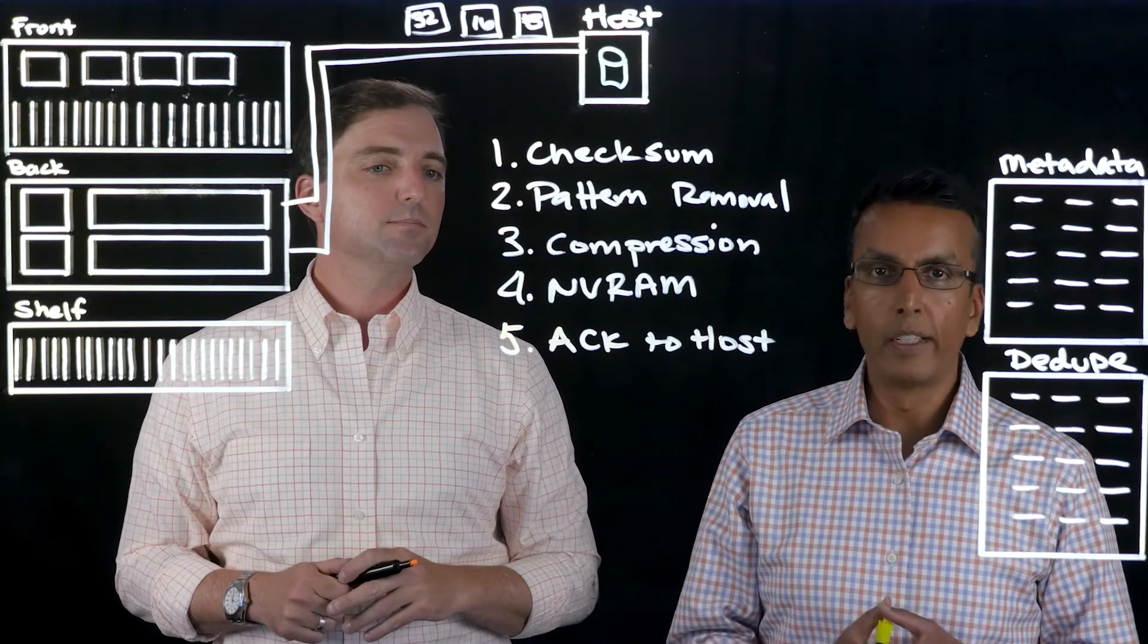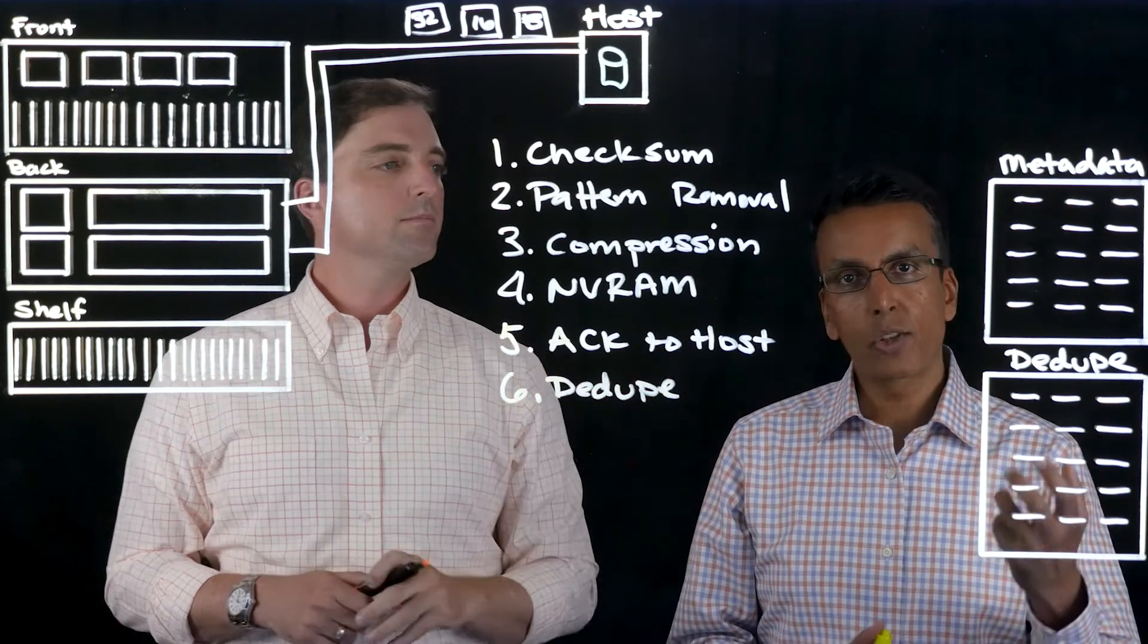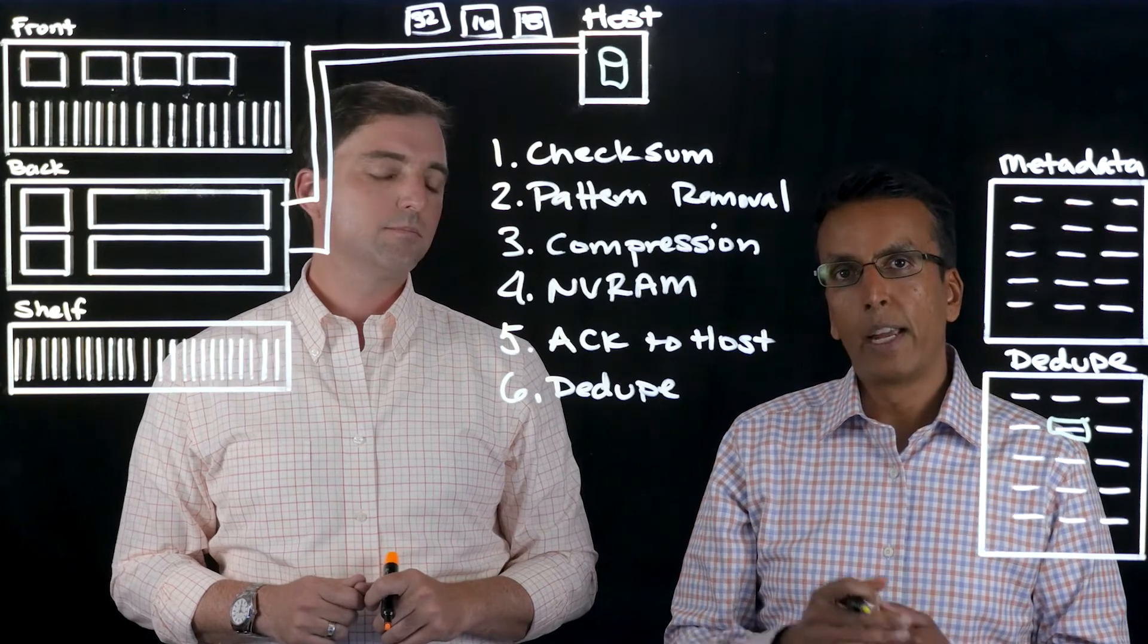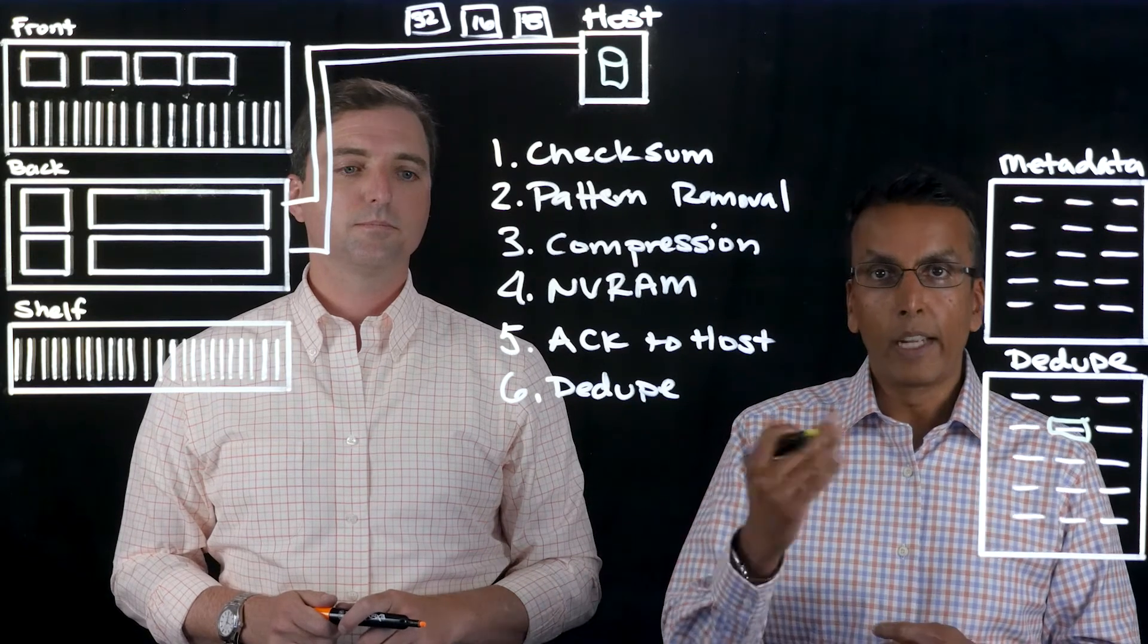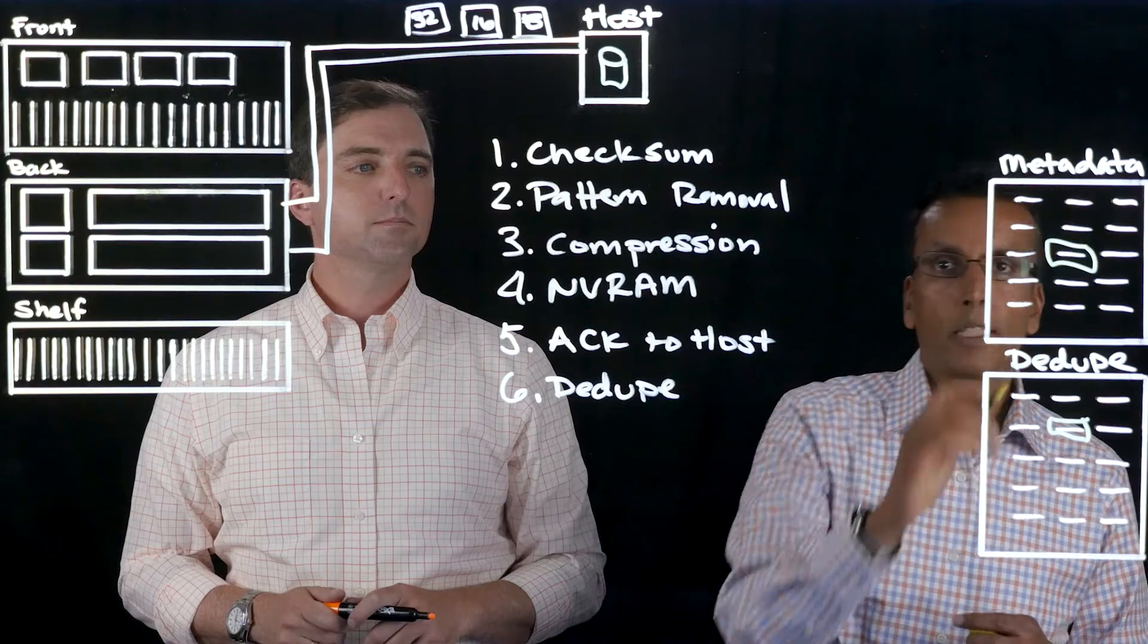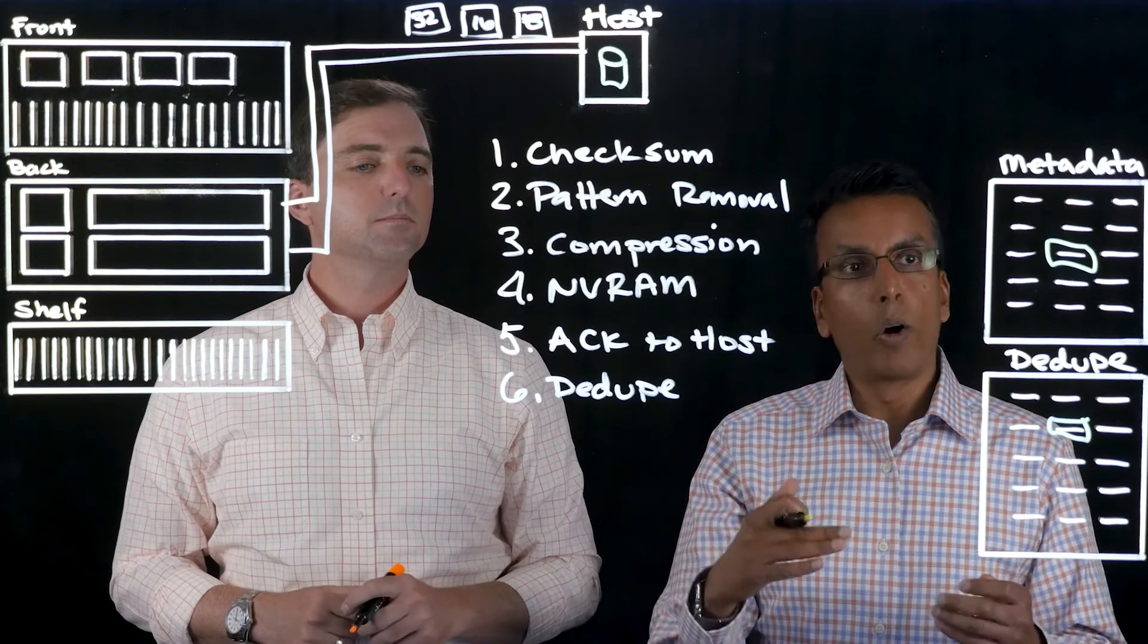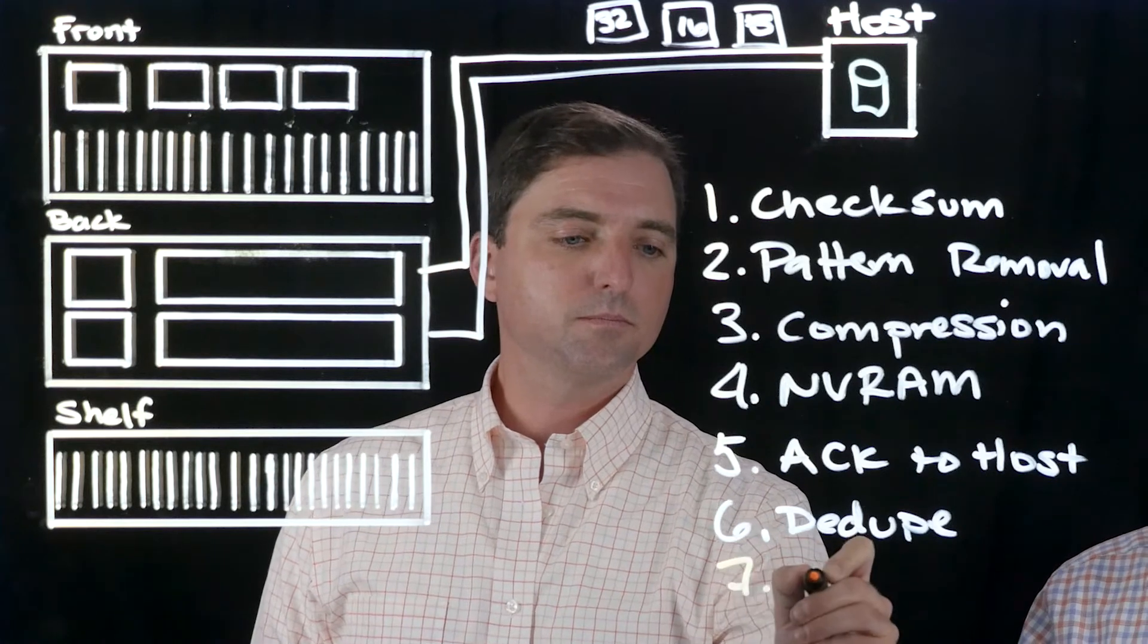The next step is looking for deduplication. We will check the hash table to see if there's a match, and if there is a match we will then do a read of the entire data that's been persisted to backend flash and do a byte-for-byte comparison to ensure 100% that there is a match. If the duplicate match succeeds, we will update the metadata and the reference count on it. At that point, if the entire data was a duplicate, that lifecycle of that write is complete. If only a portion of the data was duplicate, we'll take the remaining portion and then compress it.